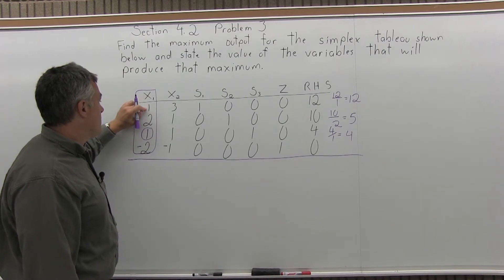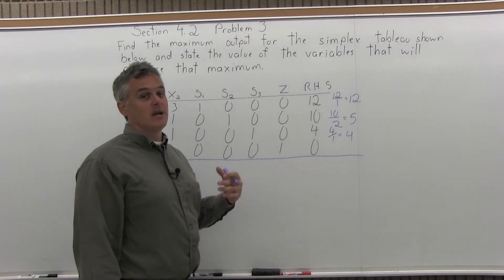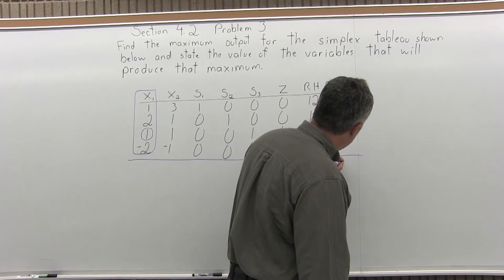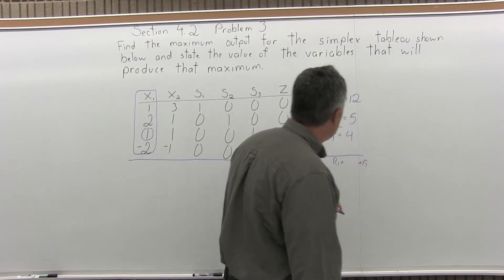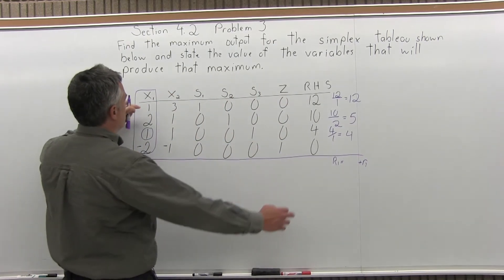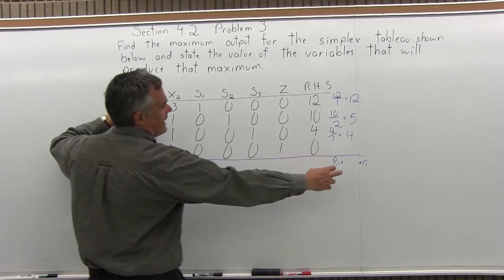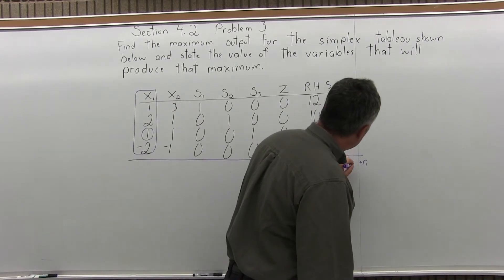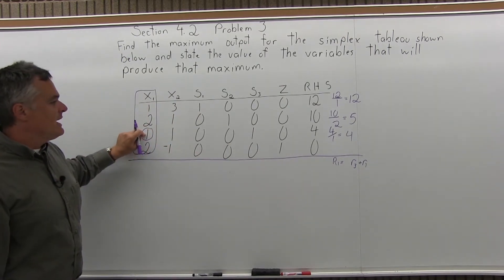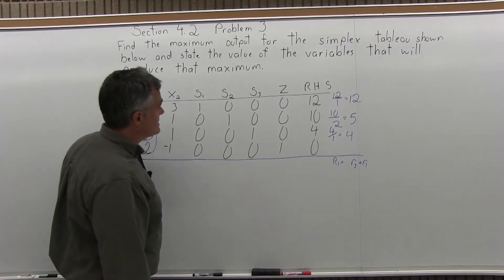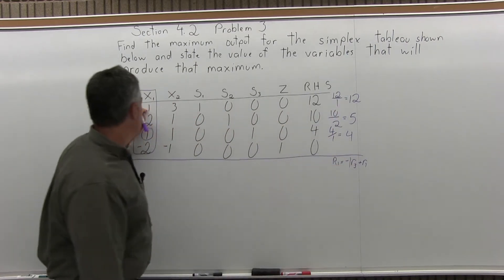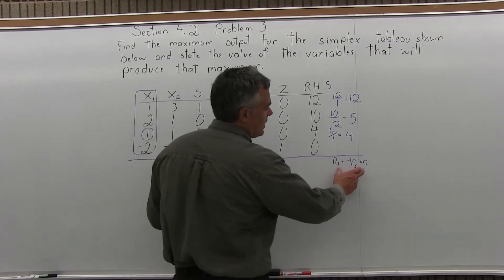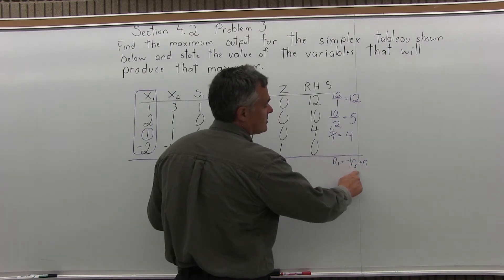In the top position of the x1 column I have a positive 1, so I need to zero it out. I'll write the equation: new Row 1 = negative 1 times Row 3 plus old Row 1. The equation starts and ends with Row 1 because that's the row I'm modifying, and Row 3 is multiplied by the same number but opposite sign as what's becoming a 0 — so negative 1.